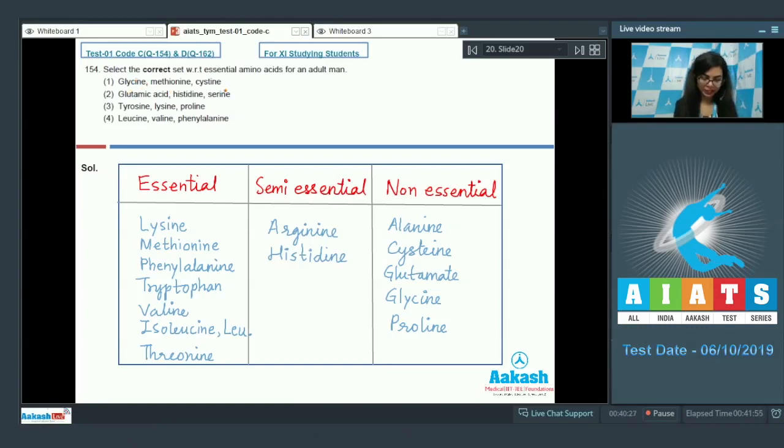Looking at option one, glycine, methionine, and cysteine—cysteine is a non-essential amino acid, so this is incorrect. Option two, glutamic acid, histidine, and serine—glutamic acid or glutamate is non-essential, making this incorrect. Option three, tyrosine, lysine, and proline—proline is non-essential, so this is incorrect.